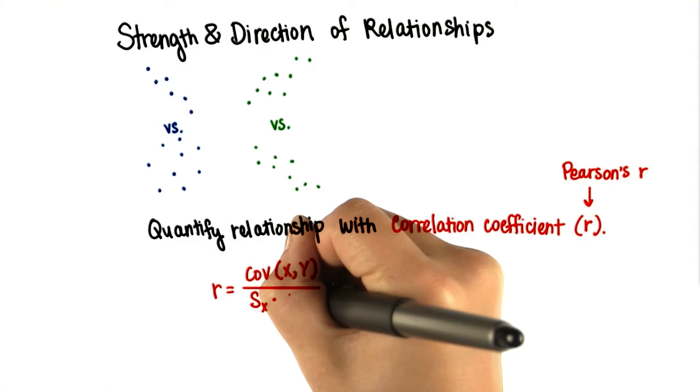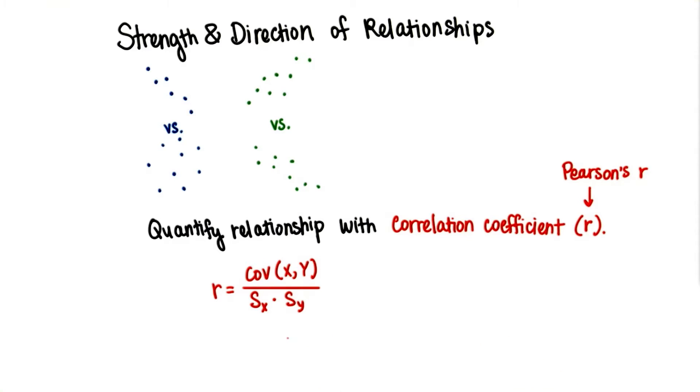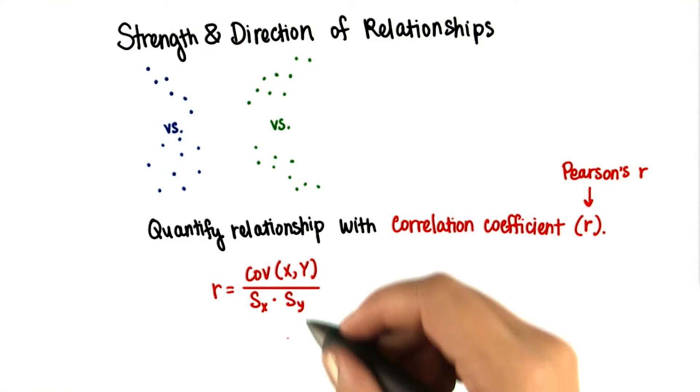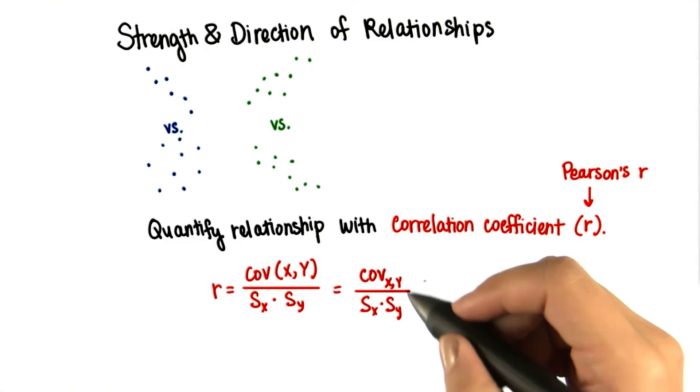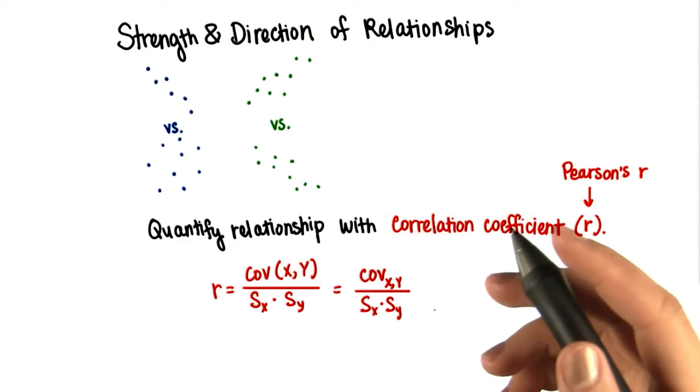And the denominator is the standard deviation of x times the standard deviation of y. And this describes how the two variables vary apart from each other, rather than with each other. Another way of writing it is like this. Even though r is a ratio, it's not interpreted as a percentage.